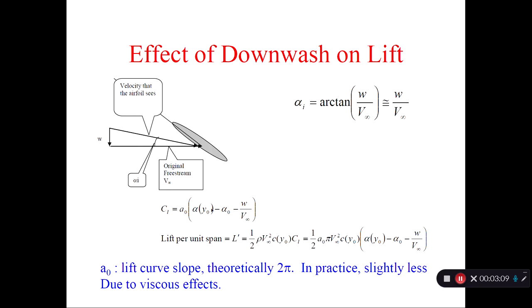So CL is 2π times (alpha minus alpha_0). Now this is the three-dimensional correction. Lift per unit span L' is ½ρV∞²c times CL. So just take the CL multiplied by this quantity. Then if you group it, you get this expression. There's also a ρ here, I forgot to put it in. a0 is the lift curve slope, theoretically 2π from chapter 4. But if you had measured lift curve slope, by all means use it.